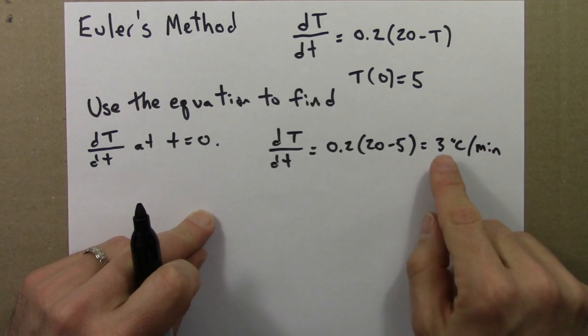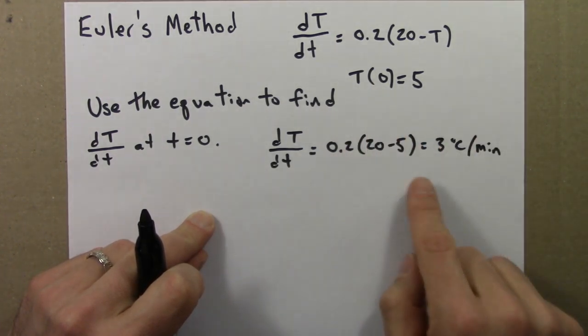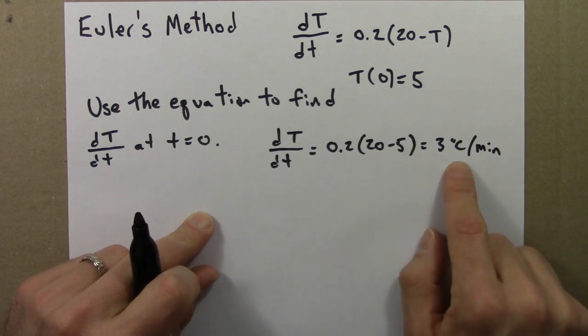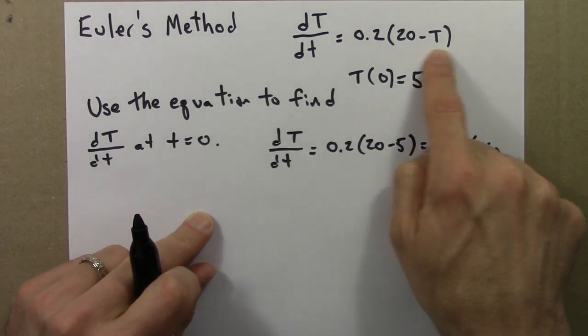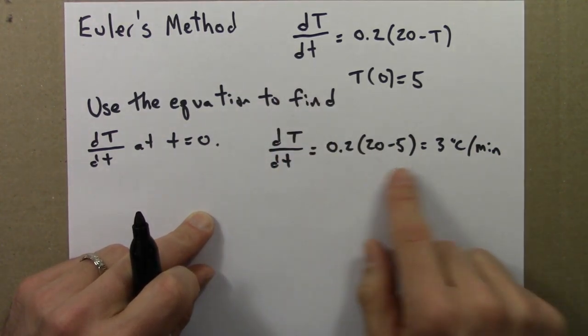So I can use this rate to figure out the temperature at a later time. Uh-oh, but there's a problem, which is that this rate is not constant. The rate is always changing. As soon as a temperature changes a little bit, the derivative changes, the rate changes a little bit. So we're in a bit of a dilemma.